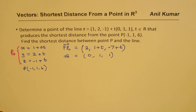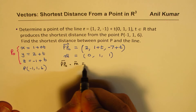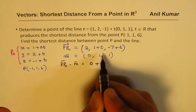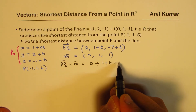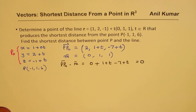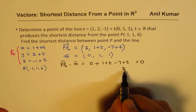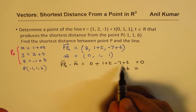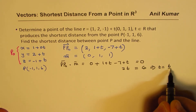For them to be perpendicular, the dot product should be 0. So PP0 · M = 2(0) + (1 + t)(1) + (−7 + t)(1) = 0, which gives 1 + t − 7 + t = 0, so 2t − 6 = 0, giving t = 3.